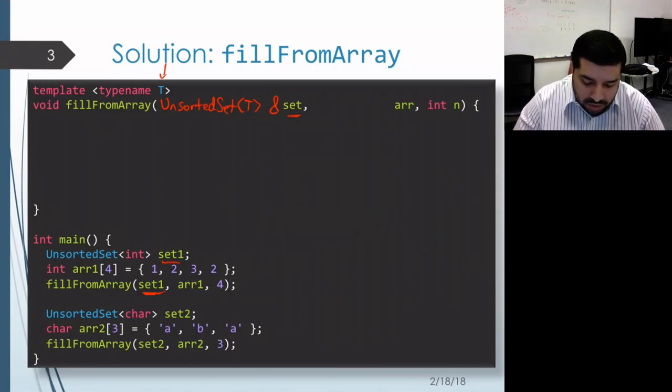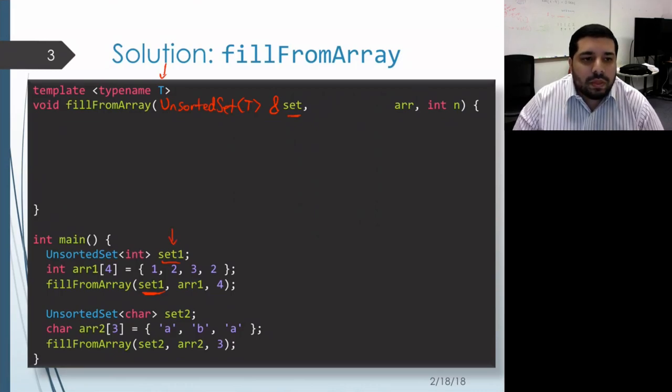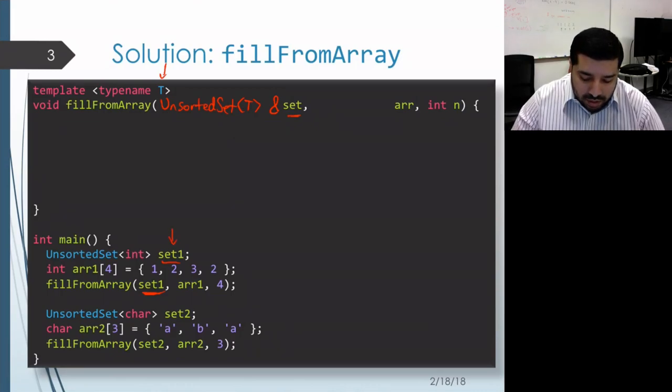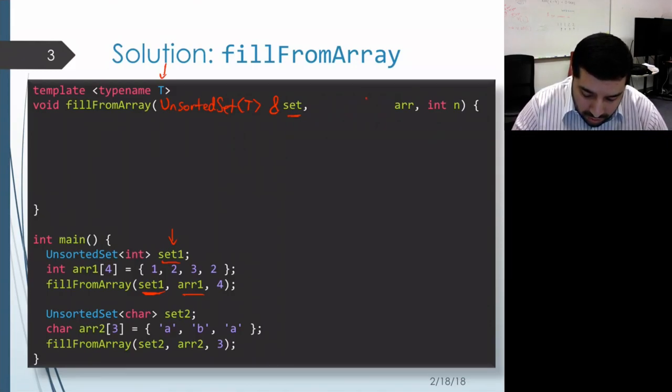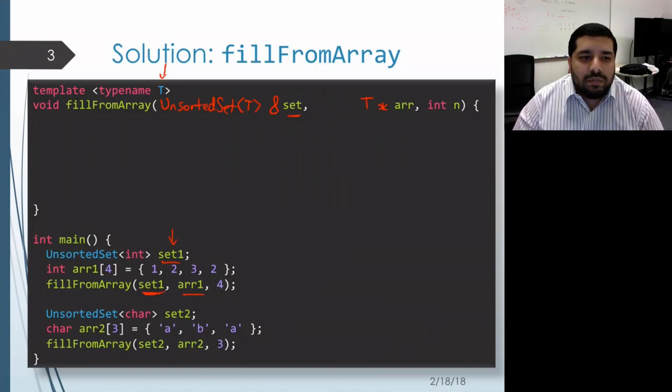Now looking at the second argument to fillFromArray, we're passing it an array, and if we pass an array by value what happens is that it turns into a pointer to the first element. This is going to turn into an int star - of course, we don't want to hard code the type int. We want this to work for any element type, so what we should put as our parameter instead is T star.